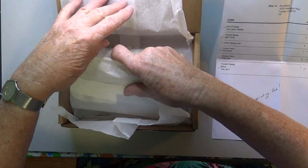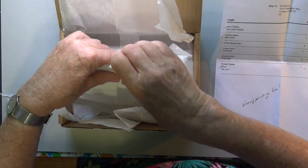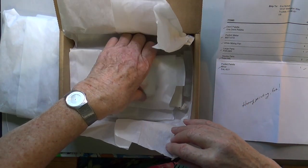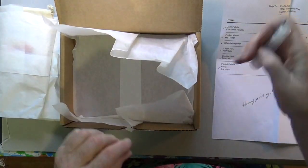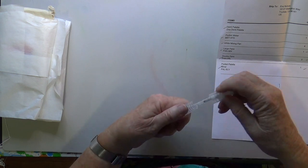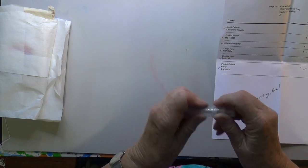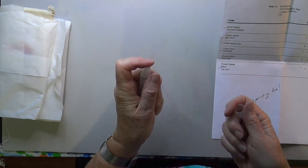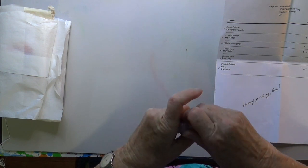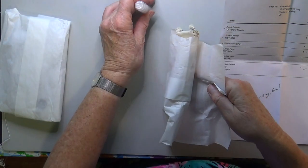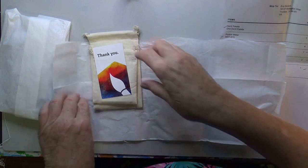Here's the packing list: I got a Demi palette, a pocket mister, white mixing pans, large pans, double pans, and a pocket palette. Here they are in the box. That's a little mister. Let's take a look. I thought it would be nice to have just a little mister that you can carry in a pocket. It's not going to take up much room.